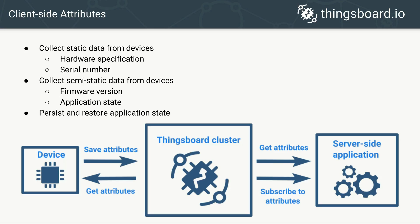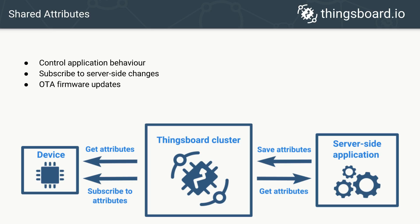Let's now proceed to review the shared device attributes. Shared attributes are managed by server-side applications and they are accessible by device applications. For example, a server-side script may use a subscription plan or account type attribute for a set-top-box device. Device and other server-side applications can subscribe to changes of these attributes and react. For example, the set-top-box application may change its behavior when the account type or subscription plan is updated. In this and other cases, Synxport acts as a middleware responsible for storage of these attributes and dispatching updates to both device-side and server-side applications.